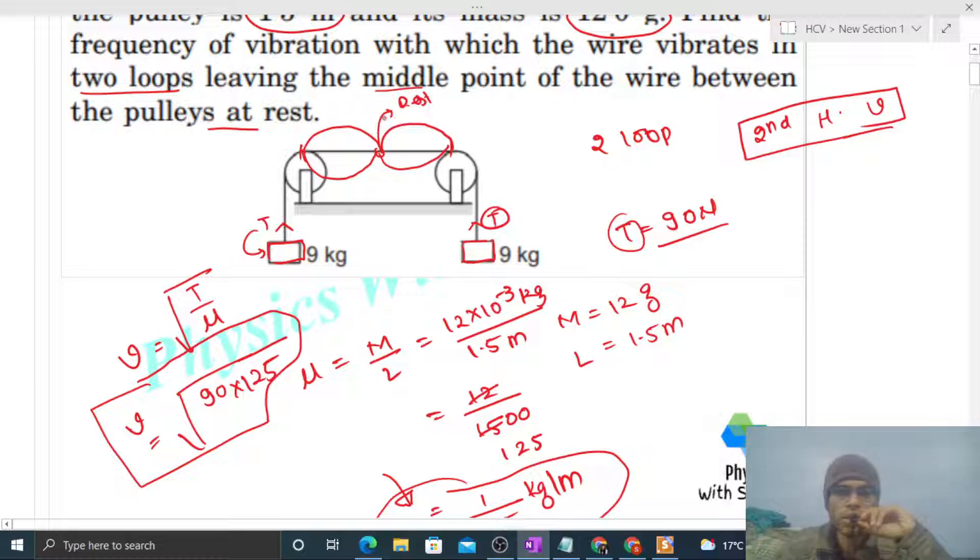What is the length of one loop? One loop's length will be lambda by 2, wavelength by 2.